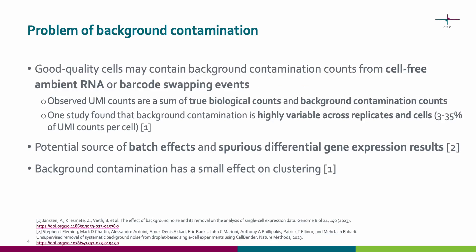We have learned how to filter out low quality cells, for example dead cells. However, estimated good quality cells may still contain background contamination counts from cell-free ambient RNA or barcode swapping events. Therefore, the observed UMI counts are actually a sum of true biological counts and background contamination counts. One study found that background contamination is highly variable across replicates in cells, and 3–35% of UMI counts per cell were from background contamination. This background contamination is a potential source of batch effects and spurious differential gene expression results. On the other hand, background contamination has a small effect on clustering.